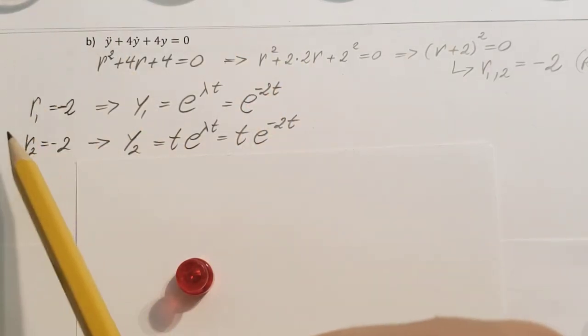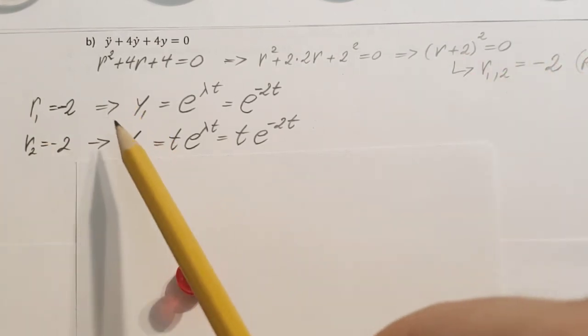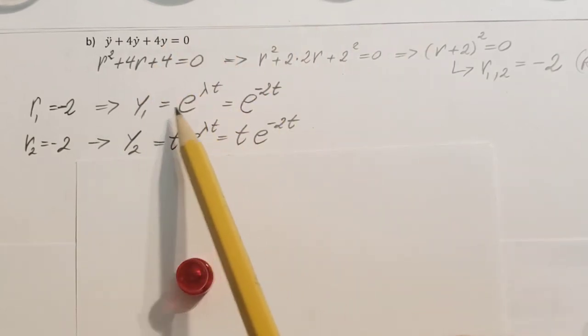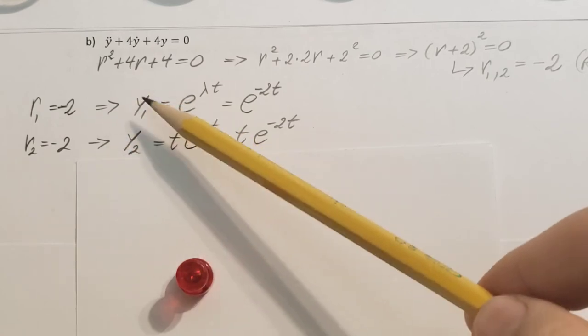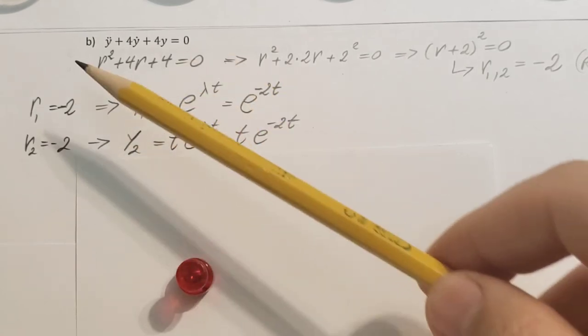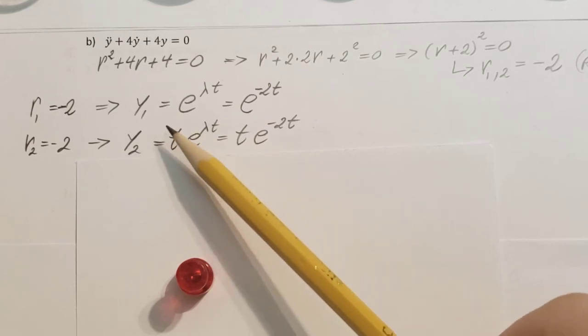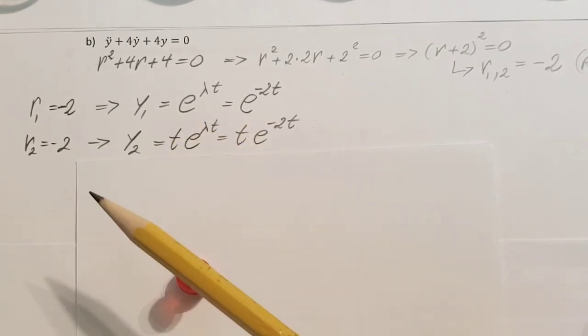Now, second one, r2, again negative 2. Both roots are the same. Now, y2 is going to give me pretty much the same thing here, but we do not want the same thing. So for this one, when this occurs, we have to make sure that we put another t in front of our e lambda t.